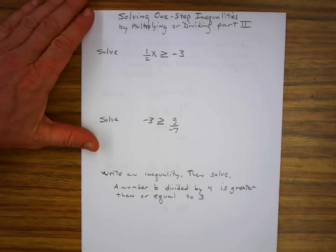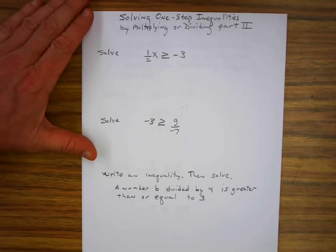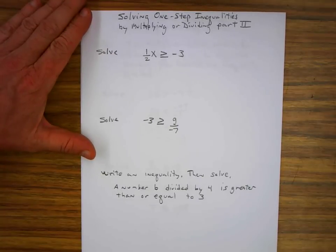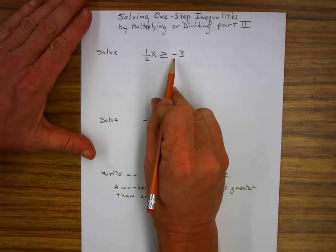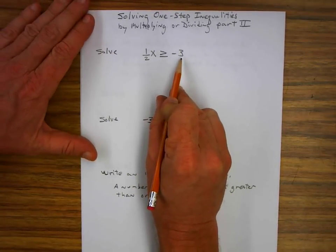Solving one-step inequalities by multiplying or dividing, part two. Solve one-half x greater than or equal to negative three.